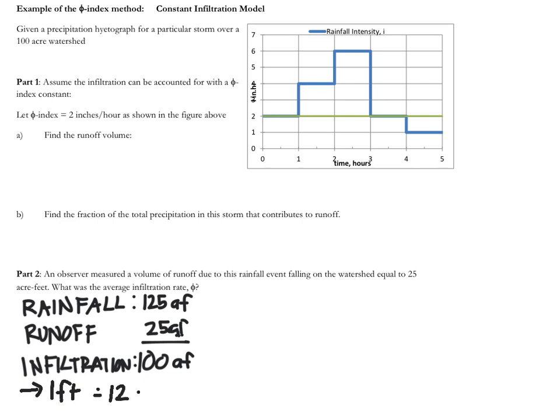This is 12 inches and it occurs over five hours. And so if we use this approximation, that would suggest that our φ would be equal to 12 inches over five hours, which is 2.4 inches per hour.